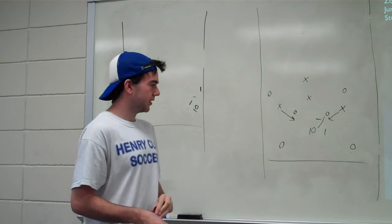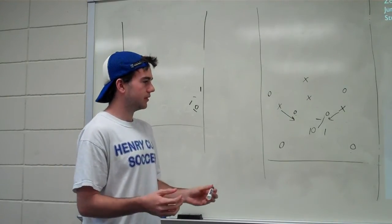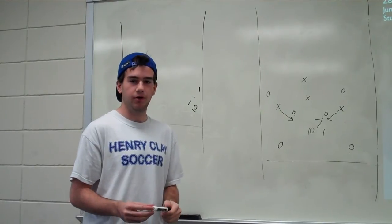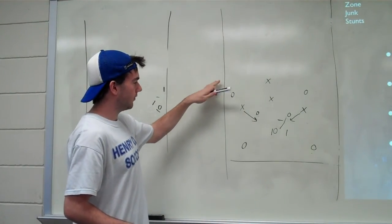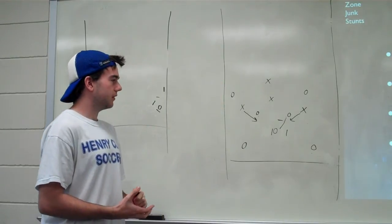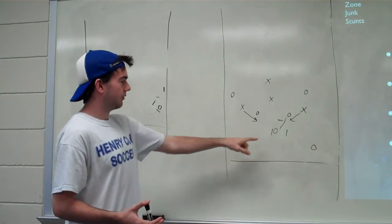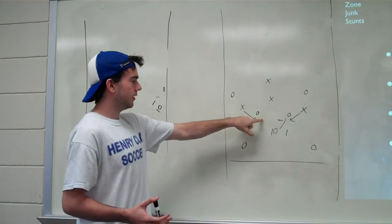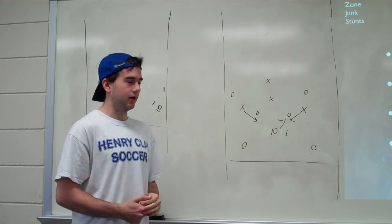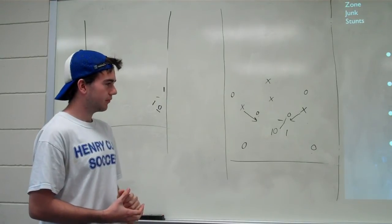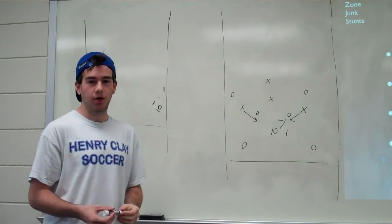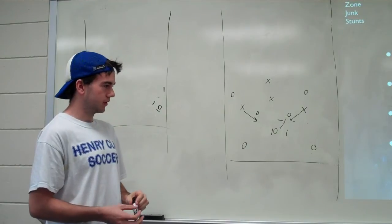The thrower skills that would defeat a zone would be a good hammer thrower, someone that can throw over top to this guy who is sort of open. But the defense would rather have that throw than a short throw moving it up to the middle guy, because that hammer you can have the deep come over and have a better play on that. But if you don't have someone who can break or throw a hammer well, then zone works very well.